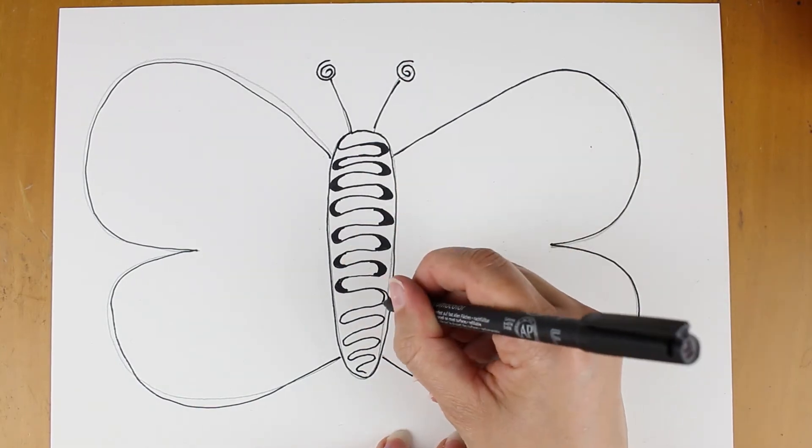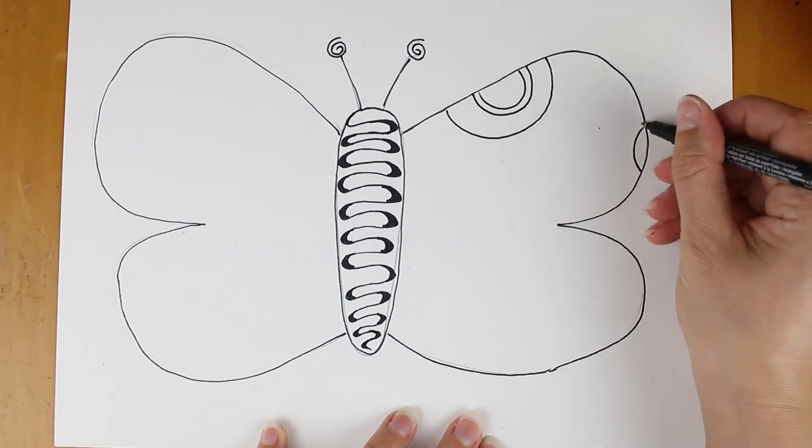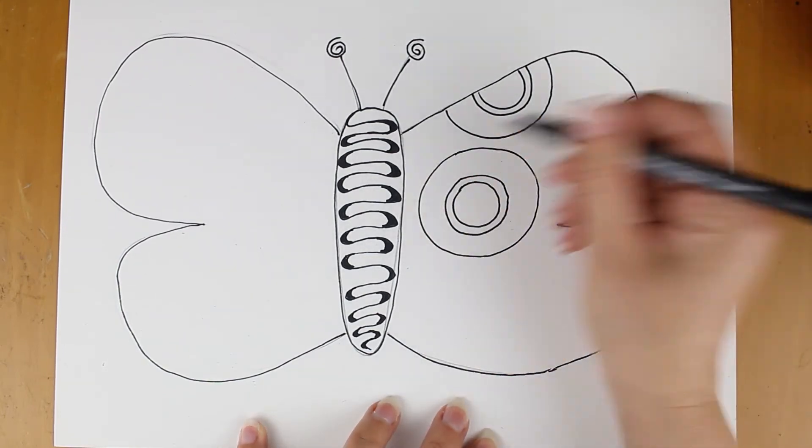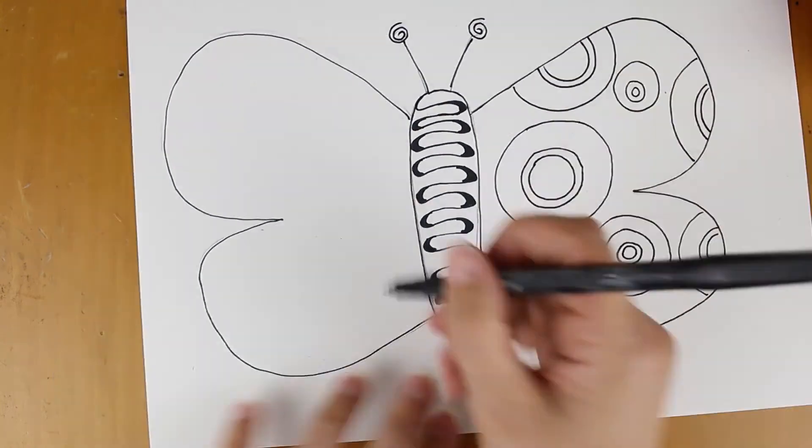So I'm going to do the same on the wings. I'm going to come up with a pattern. I think I'm going to base it on circles and semi-circles, and I'm also going to add some thicker lines within it.